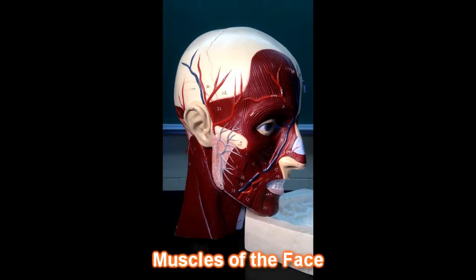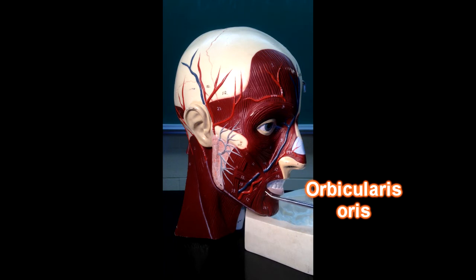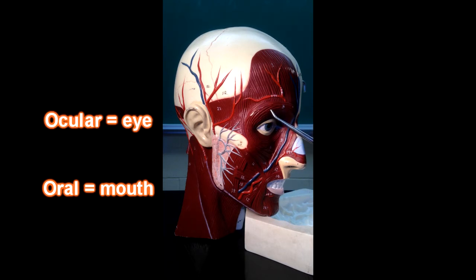Here we're looking at muscles of the face. This muscle right here is the orbicularis oculi, not to be confused with orbicularis oris, which is down here around the mouth — remember, oral cavity. Orbicularis oculi is around the eye; ocular refers to eye.